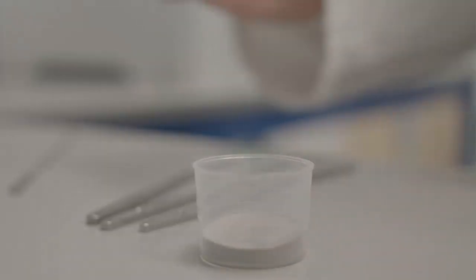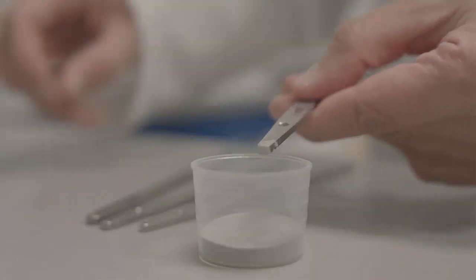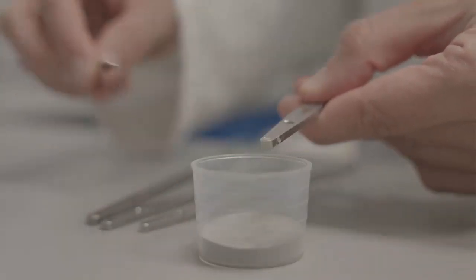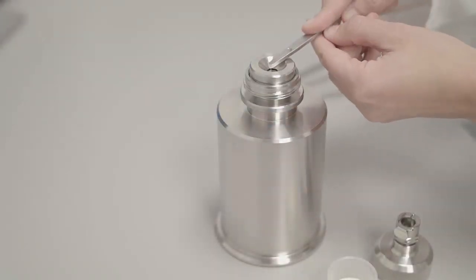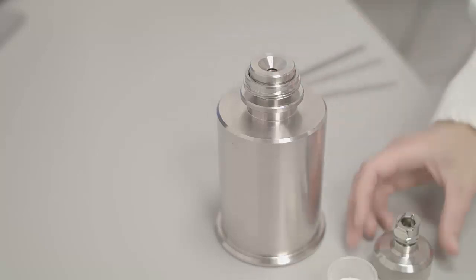Controlled sample amounts are loaded into the SDU spool with volumetric spoons. Excess sample is removed from the spoon to ensure accurate loading. The sample is then loaded into the dispersion spool and the top of the SDU replaced.